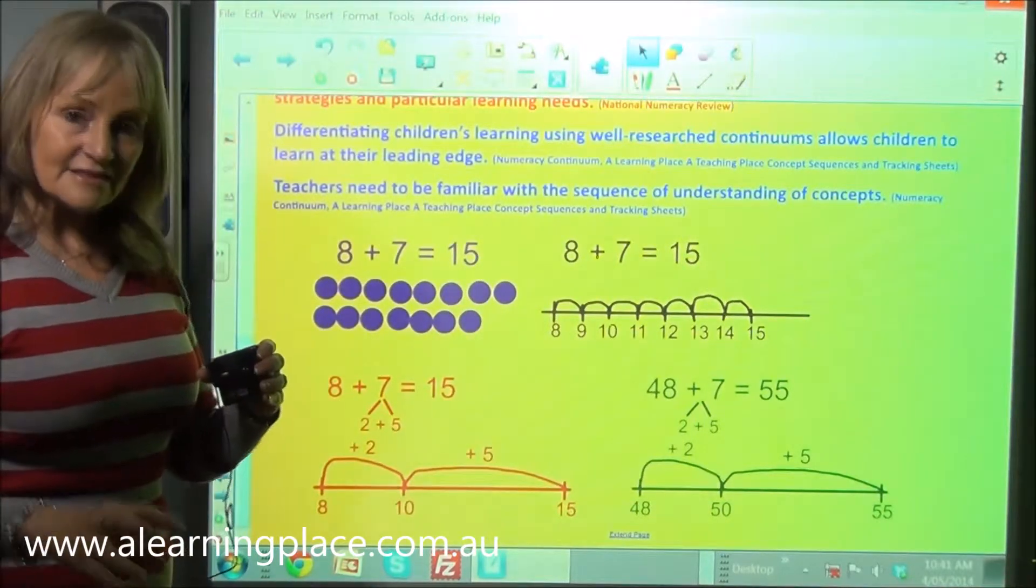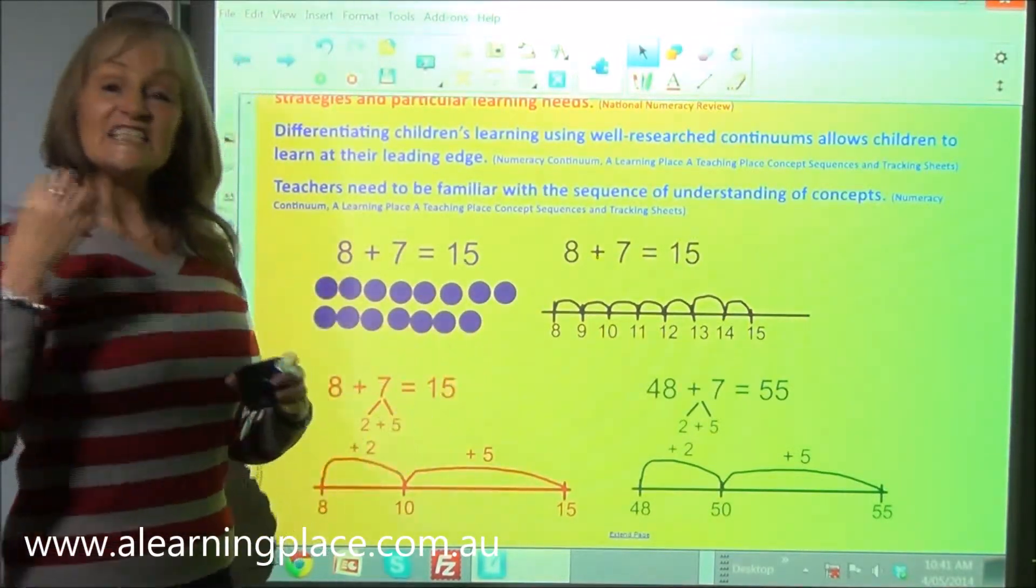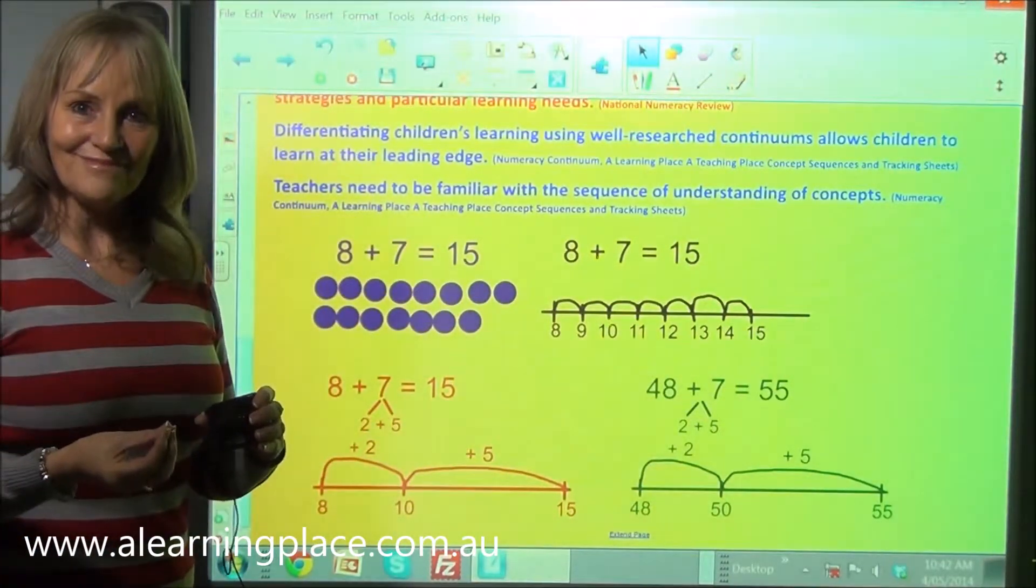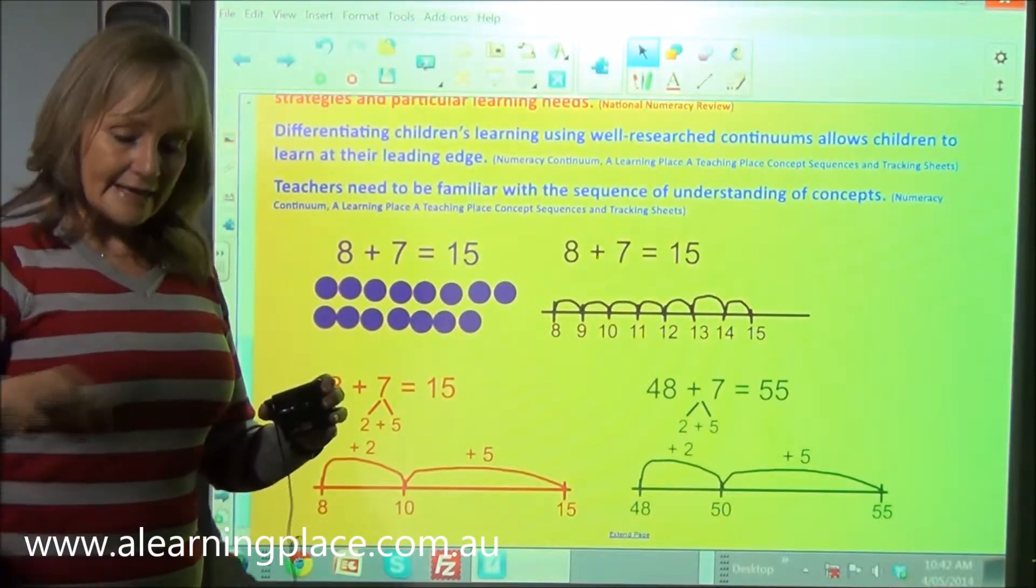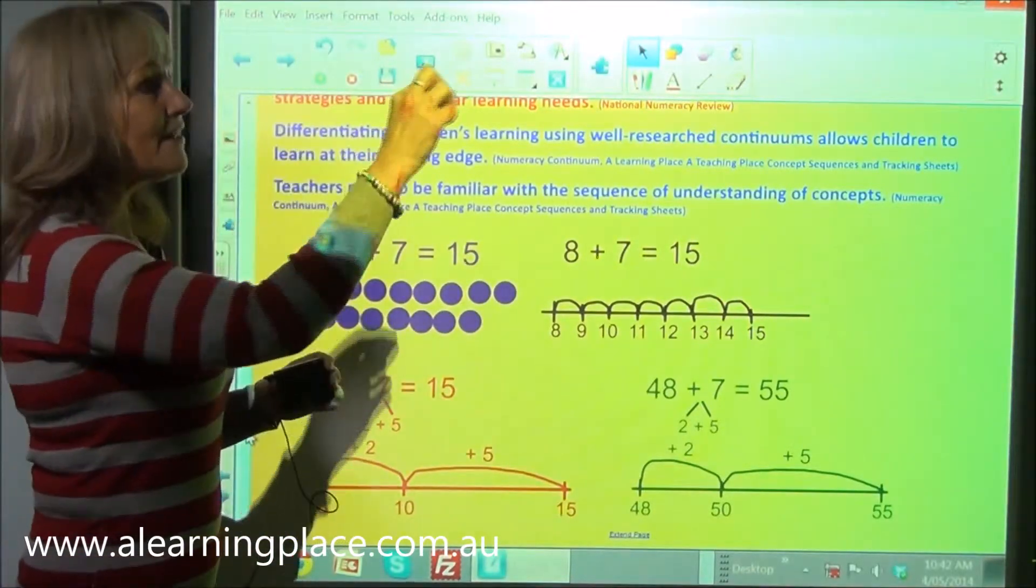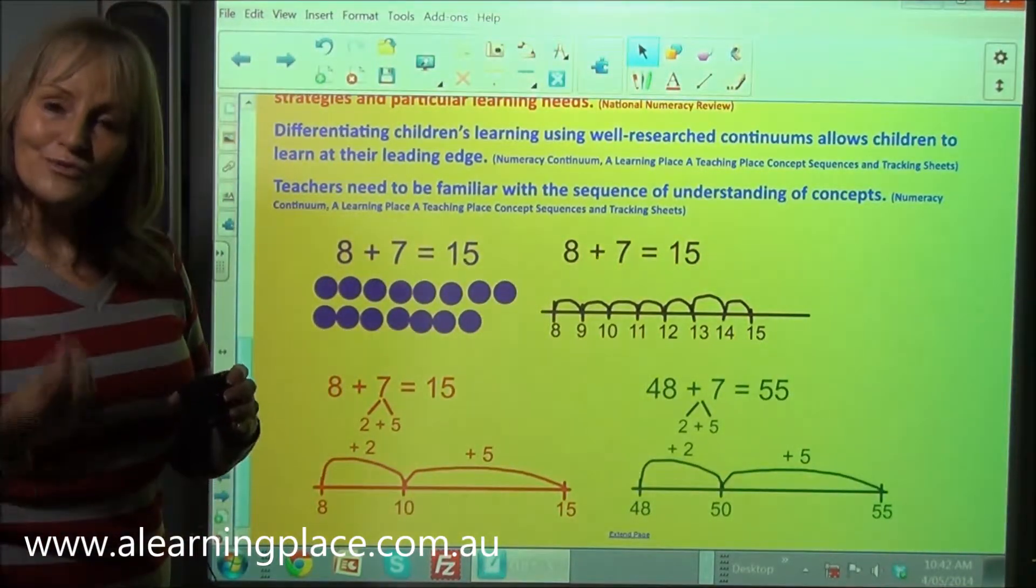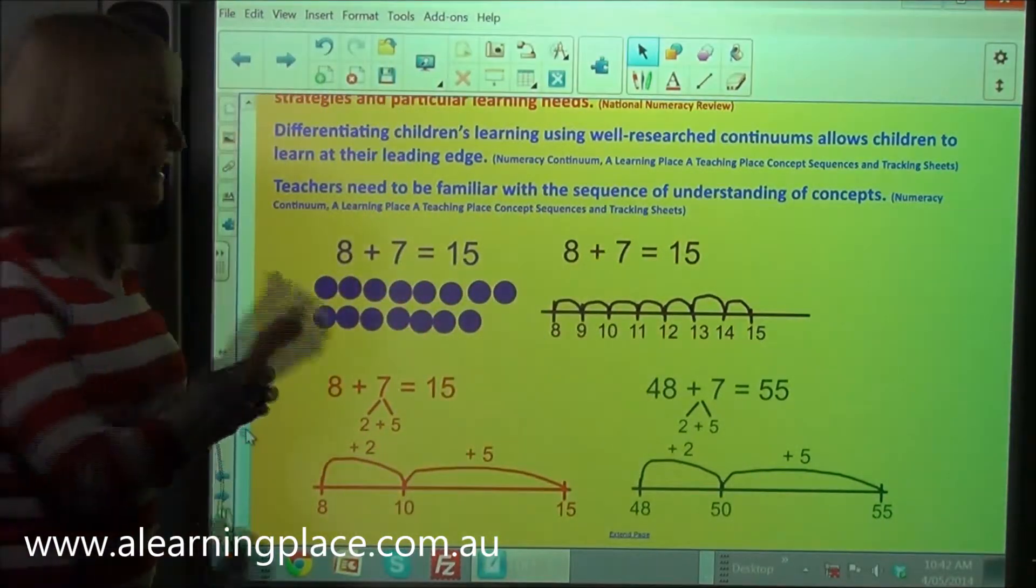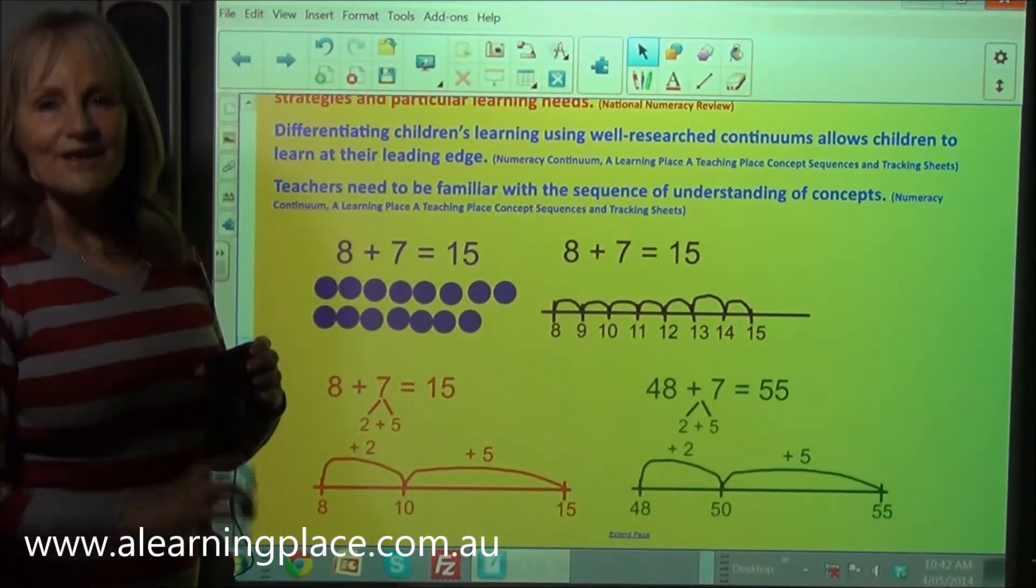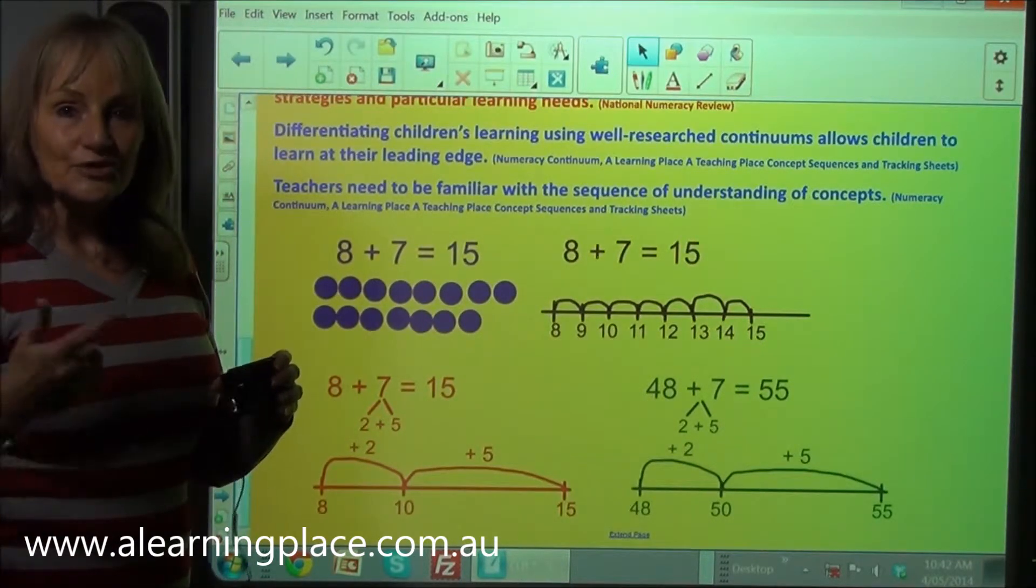Now why do they have to get counters as well as record counters? Because recording counters is easier than recording a number line, less mentally challenging, but if they have to go to all the trouble of opening the counters, getting out eight counters, getting out seven counters, counting all of the counters, drawing their eight counters, drawing their seven counters, that's a lot more effort. So they will move on to higher strategies faster because it's less effort to draw a number line and do seven jumps than it was to do all of that effort in getting out the counters. So that's why I have no fingers and they have to use counters not just draw them.